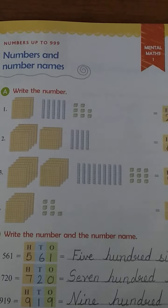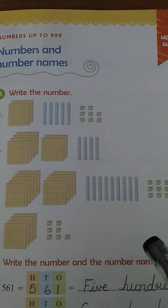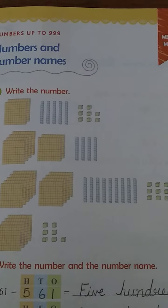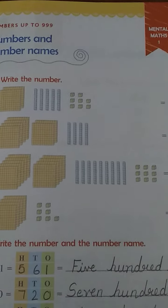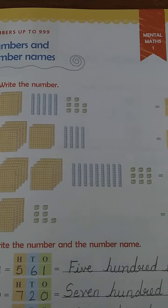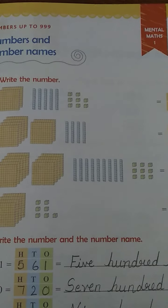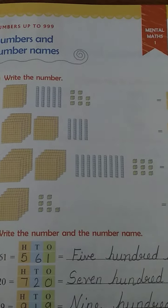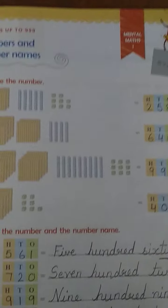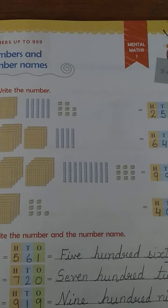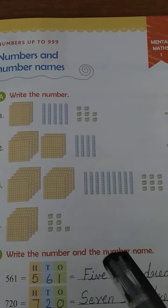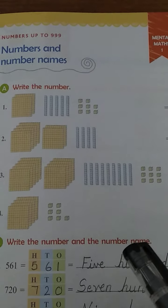Today we are going to learn numbers from 201 till 999. You already must be knowing numbers from 1 to 200. The numbers from 201 to 999 are all 3-digit numbers. So let's start discussing the questions.